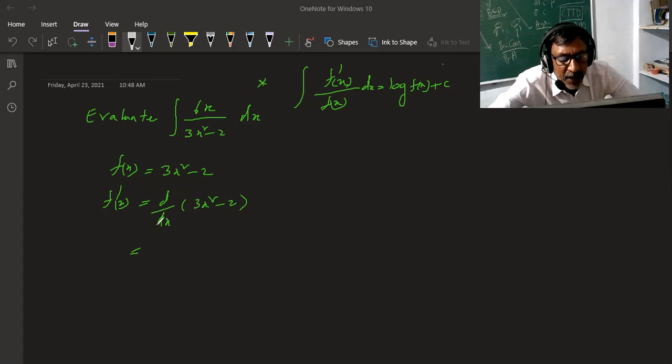3 is constant, so d by dx of 3x square. The derivative of x square...